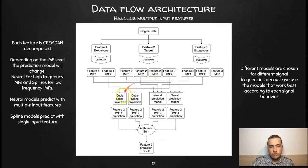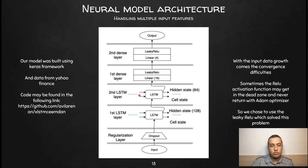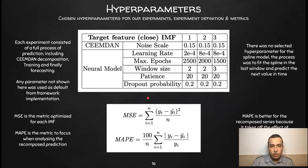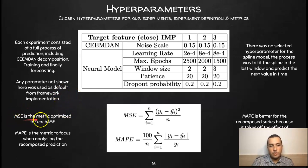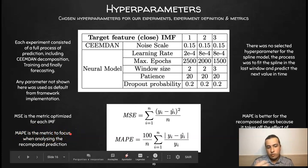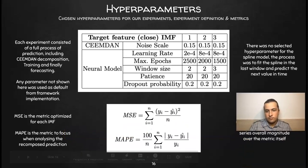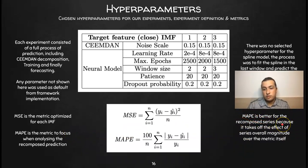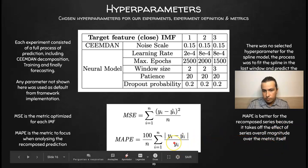Since we use different models — cubic splines and neural models — what is the best architecture we've found? Any hyperparameter not listed is considered to be the default from the Keras framework. We use the MSE metric to optimize each IMF during training, and the MAPE metric is the main metric when analyzing the recomposed prediction. MAPE is better for recomposed series because it accounts for the overall magnitude of the series by dividing by that magnitude.